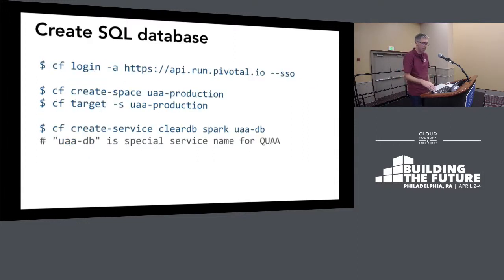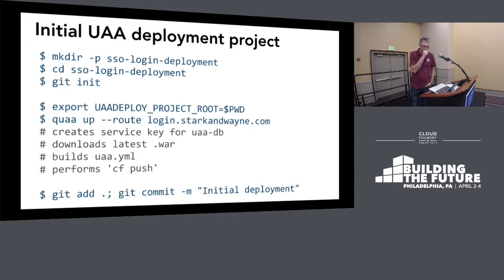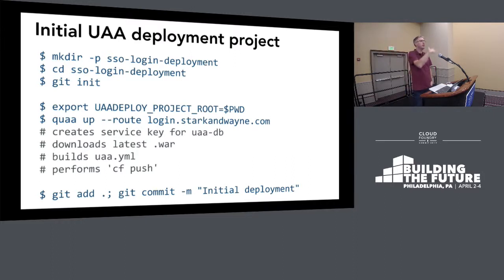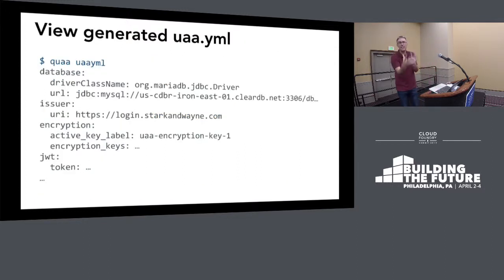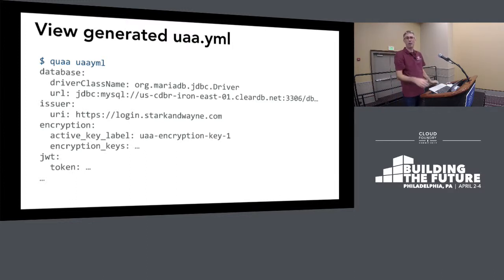We went through this process unsuccessfully just moments ago. To go through again what happened: the only thing you needed to do was create the UAA database — MySQL or Postgres. It automatically downloads the WAR file, builds that YAML file, and does the push. The UAA.yaml file is easy to get wrong. It's big, you don't know what's supposed to be in it, and when it errors — as I ably showed — it's not exactly pointing the finger at how to fix that.